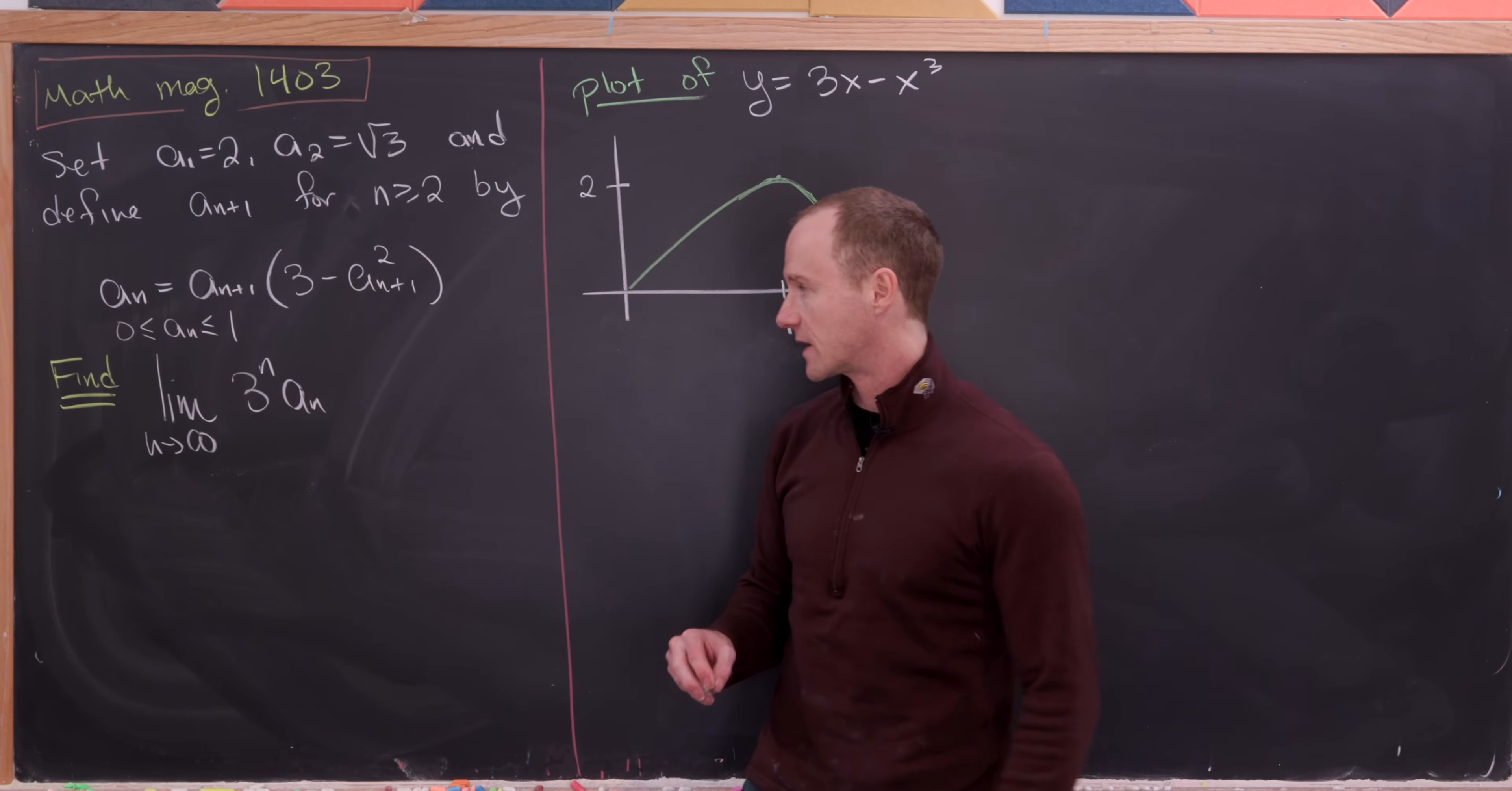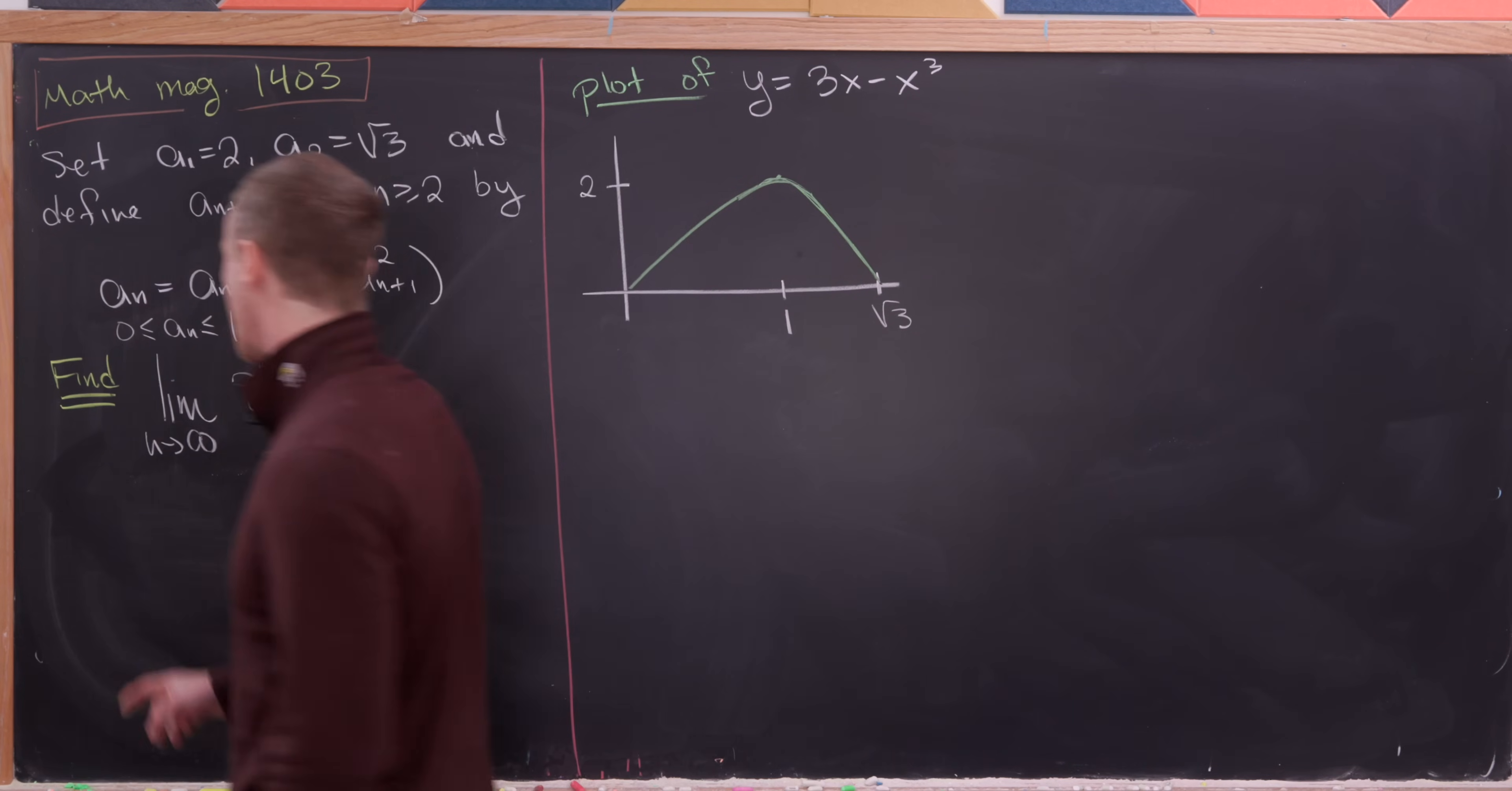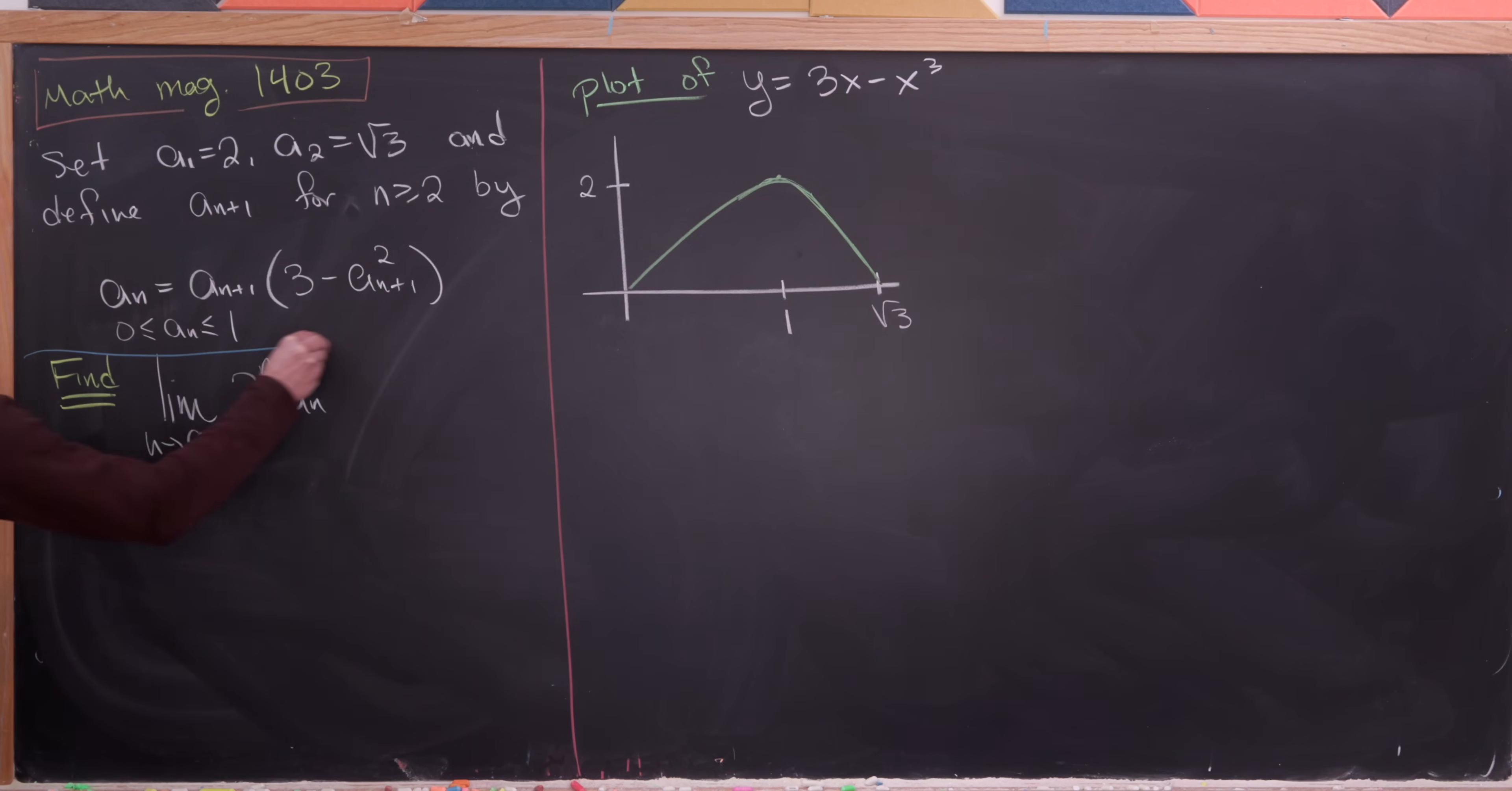And we'll see why we need to put that range there. And then our goal is to find the value of the limit as n goes to infinity of 3 to the n times a_n.